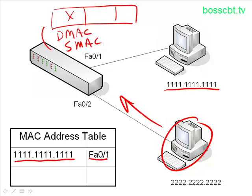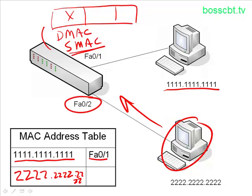But the switch does one more thing — it also looks at the source MAC address and asks, do I know about this MAC address? It looks in the MAC address table, sees it does not have it, and so it adds it. In the MAC address table it adds the MAC address, and it also adds the port number that the frame came in on. It came in on FA02, because that's where PC2 is connected. So in the MAC address table it lists FA02 as the port where MAC address 2222 can be found.